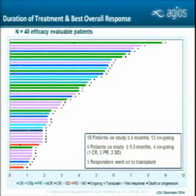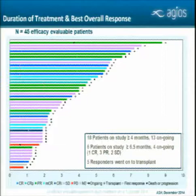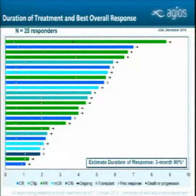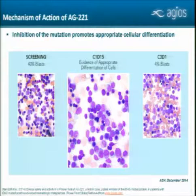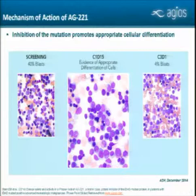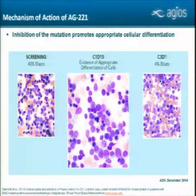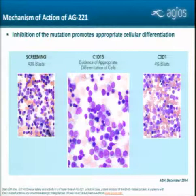Eighteen patients on study have been on treatment for greater than four months and 13 are ongoing. Six patients are on study for greater than six months, and five responders have gone on to transplant. The estimated median duration of response is three months, which is quite exciting for patients in this late-line setting. Very similar to what we saw in preclinical models, inhibition of the mutation promotes appropriate cellular differentiation. One patient who achieved a CR had 40% blasts at screening; by cycle one, day 15, there was evidence of appropriate cellular differentiation; and by cycle three, day one, only 4% blasts—a CR. We are not just destroying the marrow—we are actually pushing it through to differentiation.